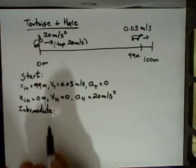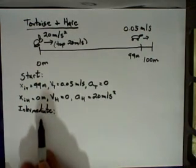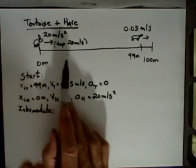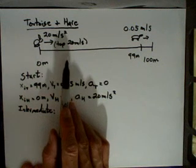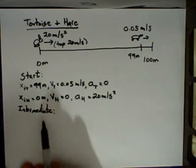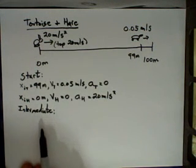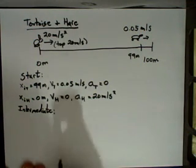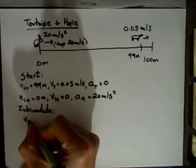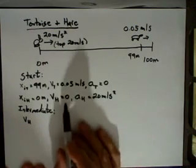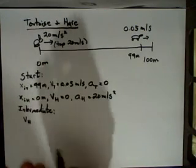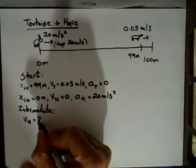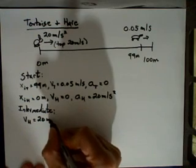And this intermediate point actually represents the ending point for the start phase. And this is what we know at that intermediate point. At the intermediate point, we know that the velocity of the hare now, after some amount of time from the starting gate, has now reached his 20 meters per second.